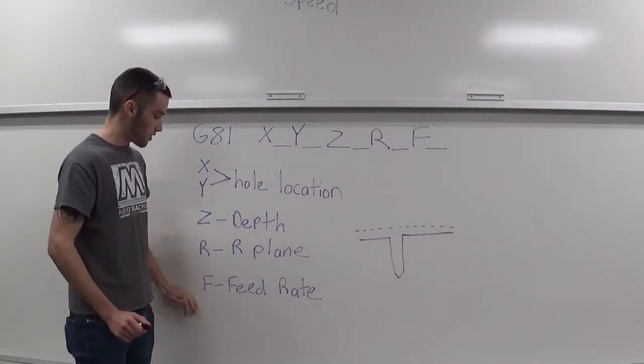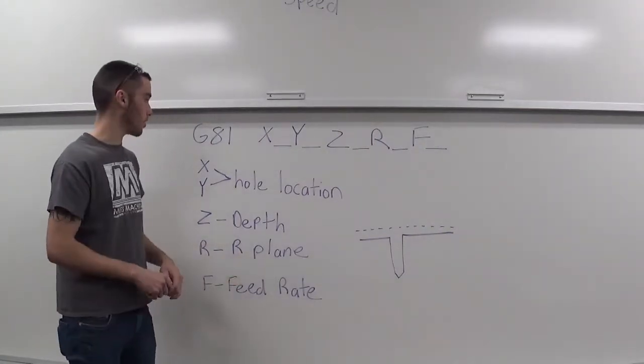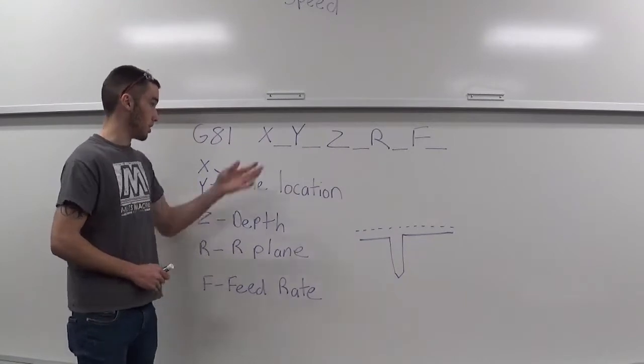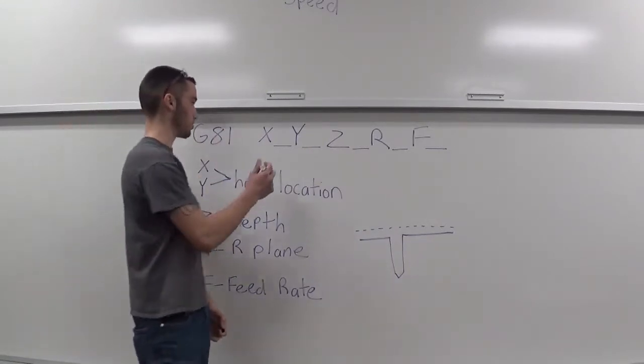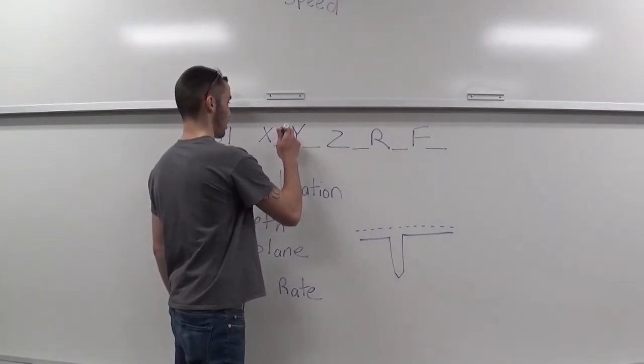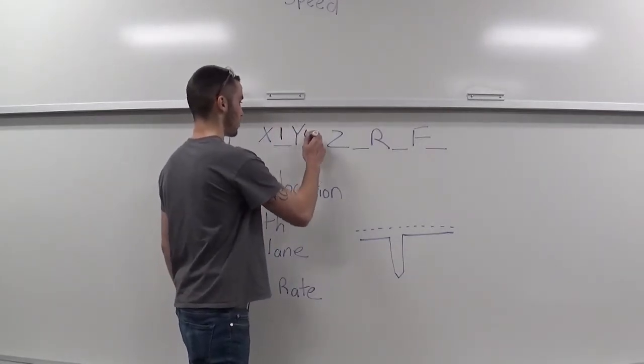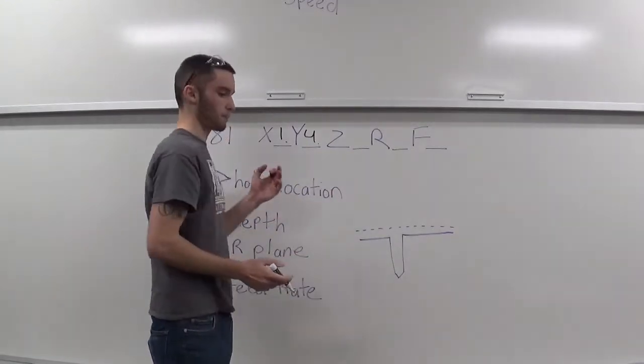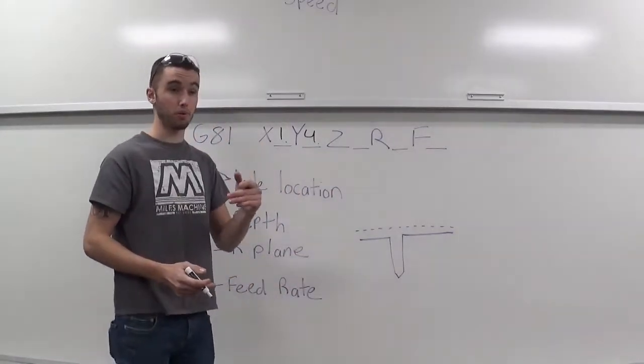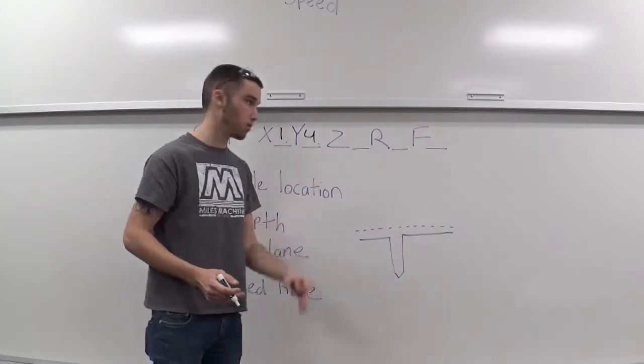Then you have your F, which is your feed rate. So, just to plug in some quick numbers here, say the hole is going to be at an X of 1 and a Y of 4, or Z. Remember, when you're using a G81, you're not doing deep holes, so your hole is most likely going to be shallow.